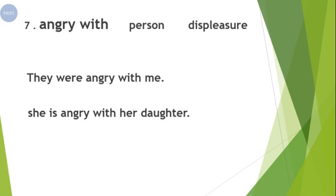Example one: 'They were angry with me' — 'angry with' used for a person. Example two: 'She is angry with her daughter' — again, 'angry with' is used for a person. So 'angry at' and 'angry with' have the same meaning, but 'angry at' is for a thing and 'angry with' is for a person.